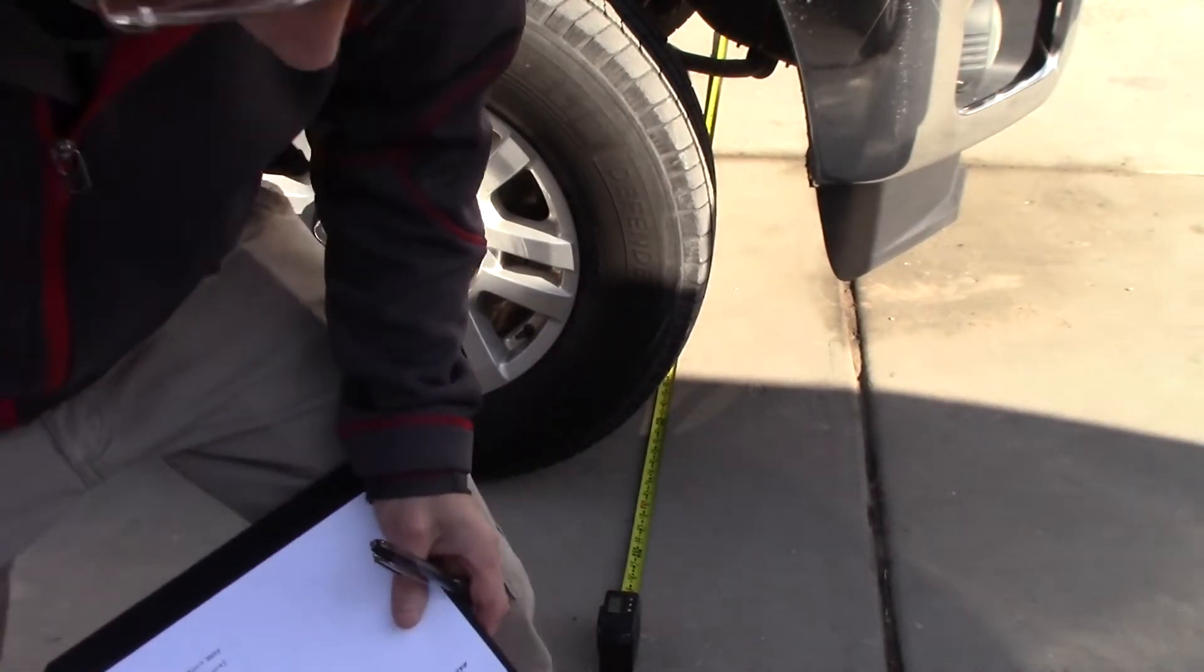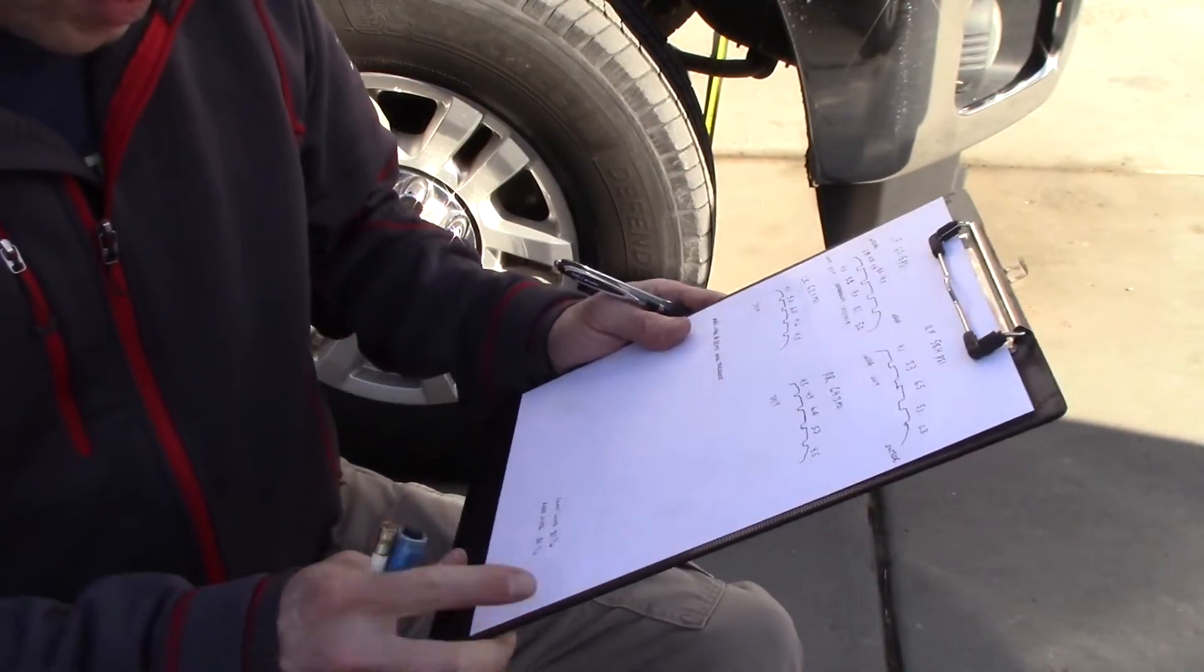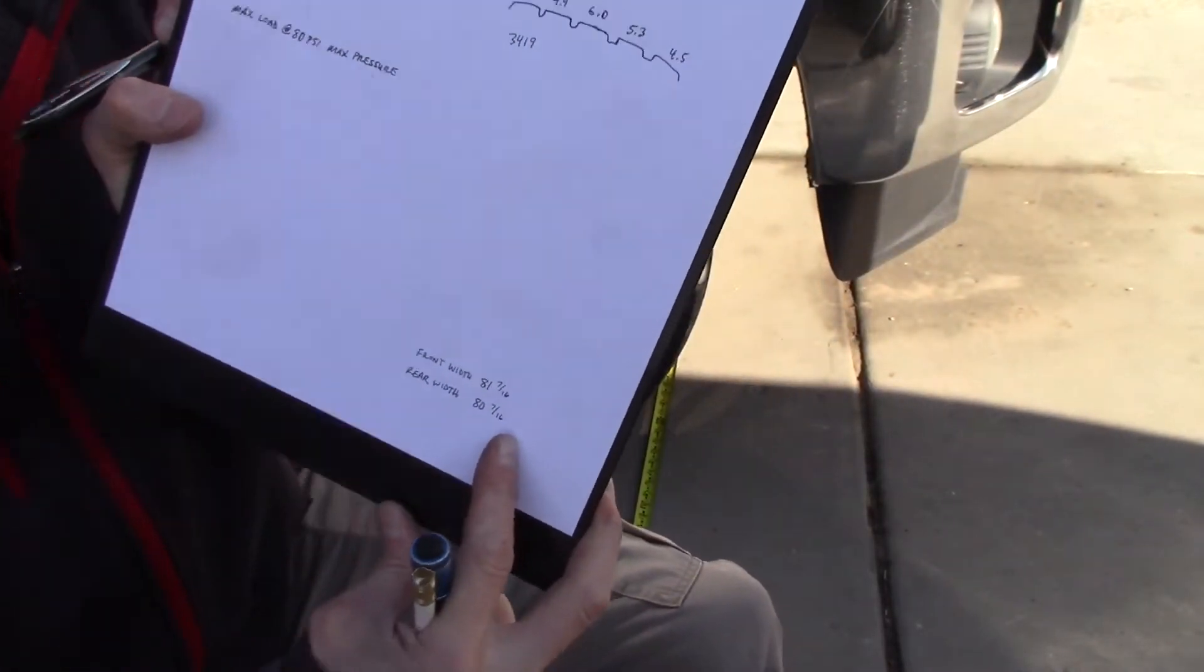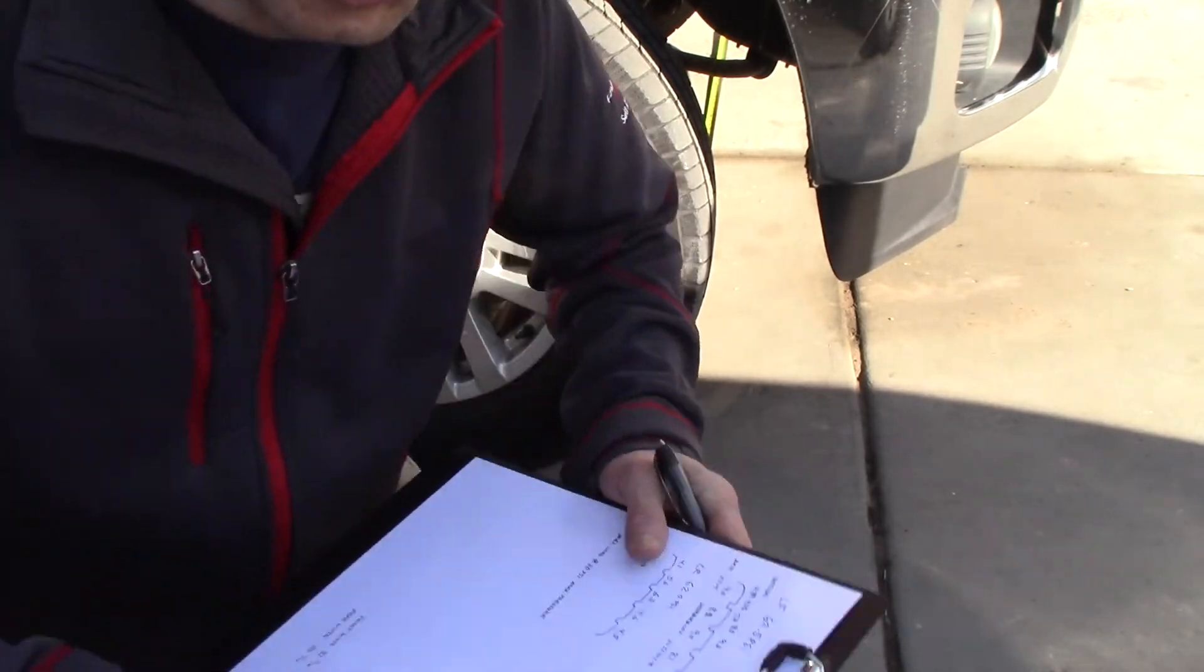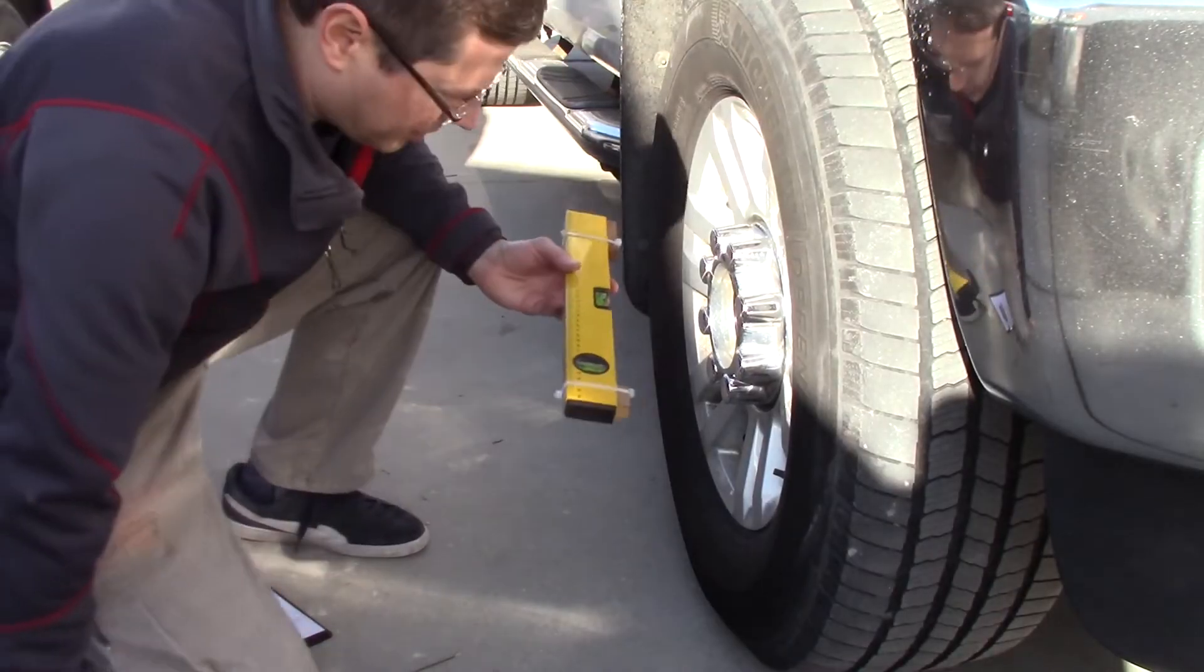Measuring the width between the front marks and the back marks, the front width is one inch wider than my back. I have to go a half inch out on both back marks to get zero degrees.